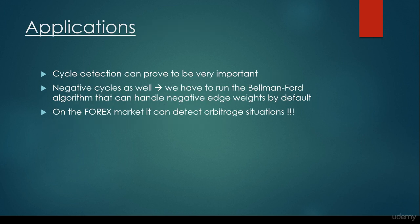So what about the applications? We are going to talk a bit more about the applications of shortest paths in a distinct lecture, but as far as Bellman-Ford algorithm is concerned, cycle detection can prove to be very important. So negative cycles as well. We have to run the Bellman-Ford algorithm that can handle negative edge weights by default, and for example, on the Forex market, it can detect arbitrage situations. What does it mean, arbitrage situations? It means riskless money.